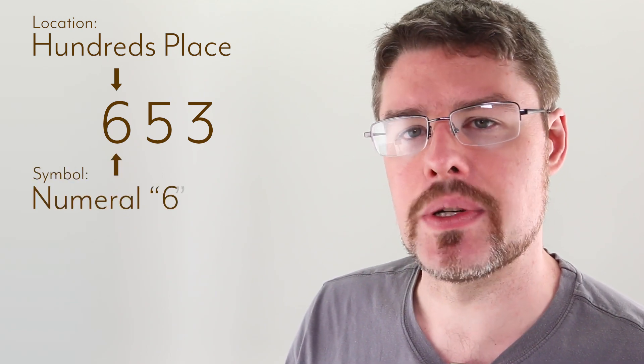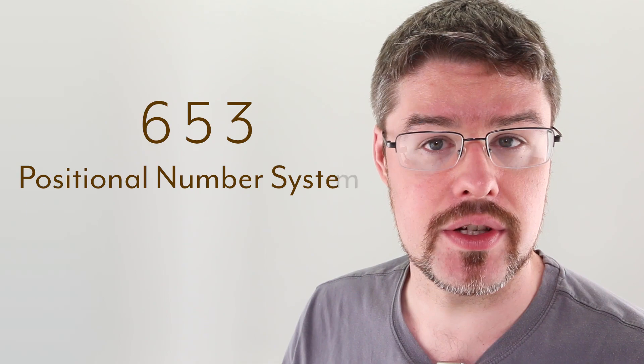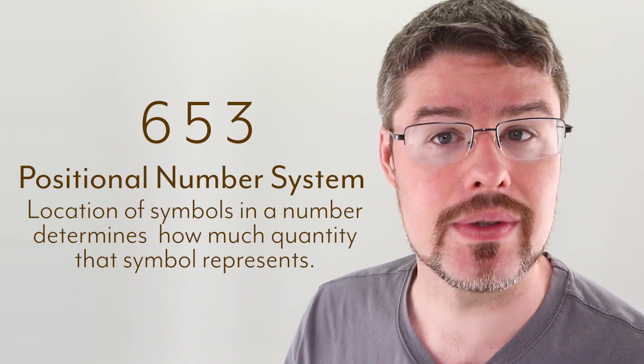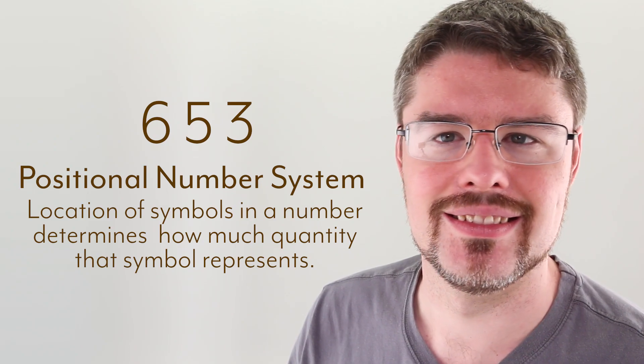We're already familiar with the place of the number having to do with how much quantity it represents. For example, if we take 653, that 6 being in the hundreds spot would be very different than if it were in the thousands spot. In that sense, we need both the location and the symbol to represent a quantity in a number. That's why we call it a positional number system. The position of the numbers counts. Aha. Count. Get it? That's never going to not be funny. Never.